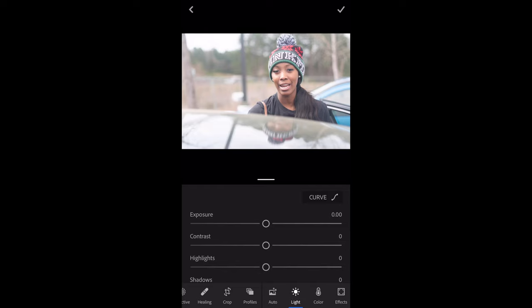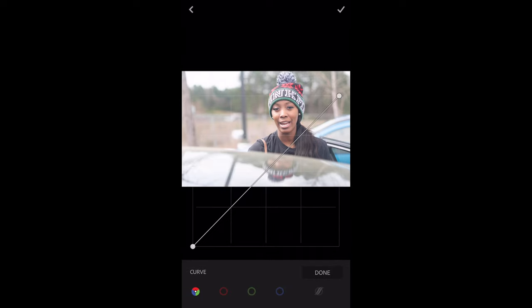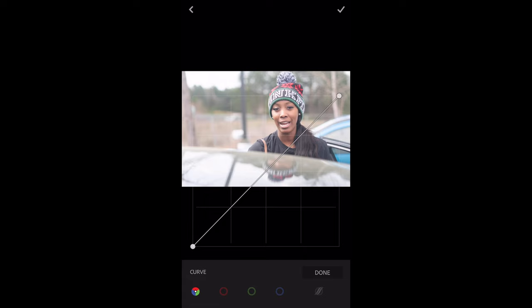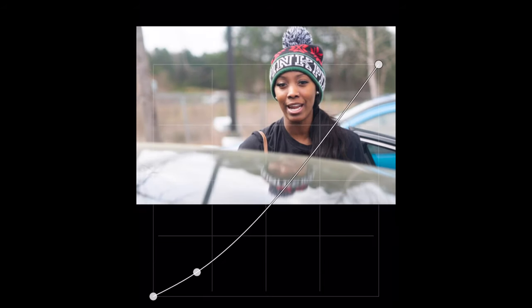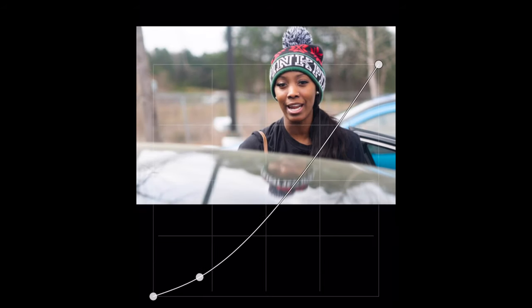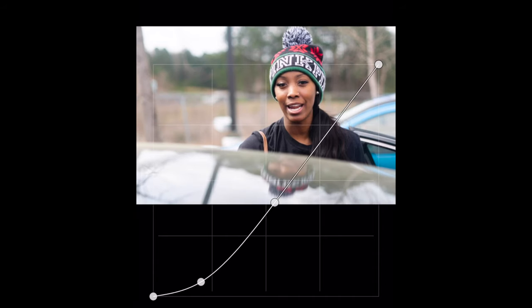Since we have a photo selected, I normally start with the tone curve. There's a long straight line going right in the middle of this square. The bottom part of that line is your shadows, the middle part is your midtones, and on top you have your highlights. I'm going to bring that down to bring in the shadows and the midtones and play a little bit with that.